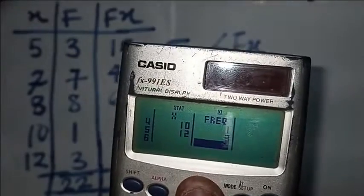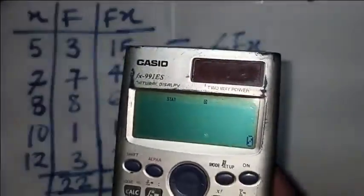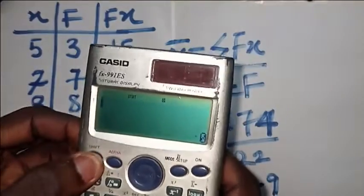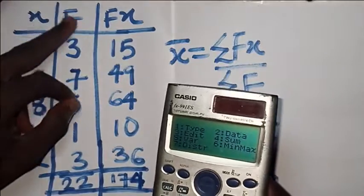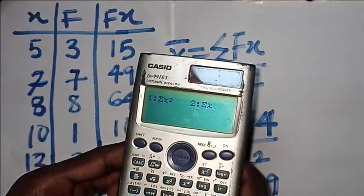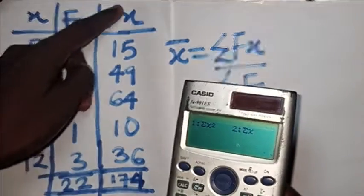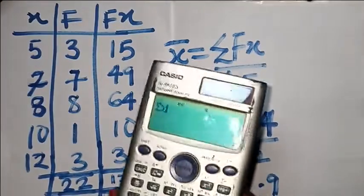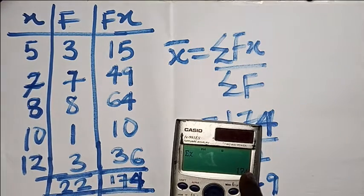After entering all numbers, click AC. Everything goes back to normal. To get your answers, click Shift then 1. You can see 'Sum'. To get summation FX, click on 4 — you can see summation X and summation FX options. Click on 2 for summation FX, then press equals. You will see 174, which matches our manual calculation.